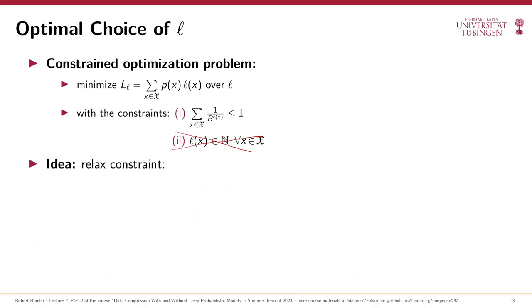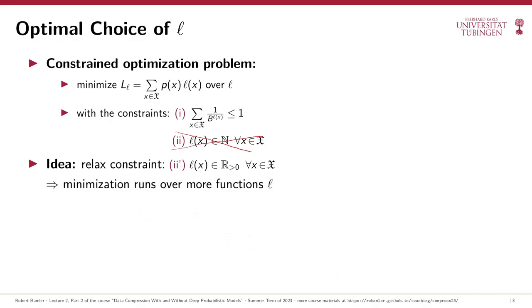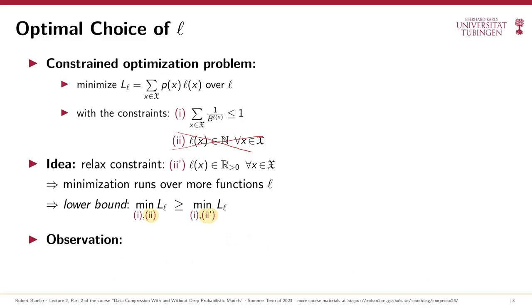With the relaxed constraint allowing real-valued positive lengths, the minimization runs over strictly more functions, so the minimum under the relaxed constraint is a lower bound to the minimum under the original integer constraint. We can solve the relaxed problem easily. We first observe that the Kraft inequality will be satisfied with equality at the optimum: if the left-hand side were strictly less than 1, we could reduce some l(x) by an infinitesimal amount while staying within the constraint, which would also reduce the objective.